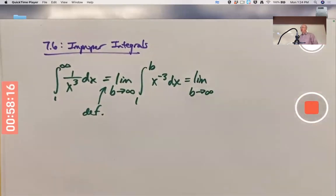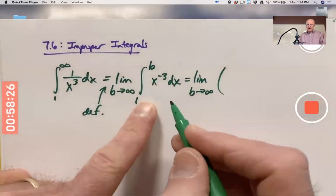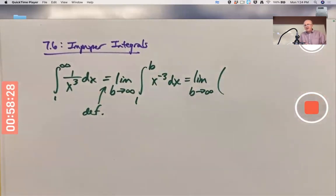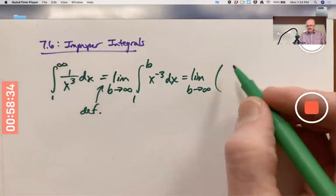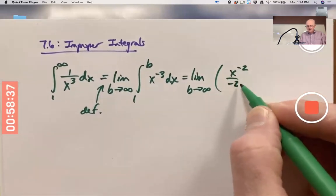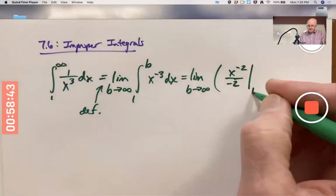You must carry the limit sign along for sake of correctness and clarity. But, you know, that integral right there is an ordinary integral. I can do it as an ordinary integral. Use the fundamental theorem of calculus. Anti-derivative of x to the negative 3 is x to the negative 2 divided by negative 2. Add 1 to the exponent and divide by the same number. Evaluated from 1 to b.